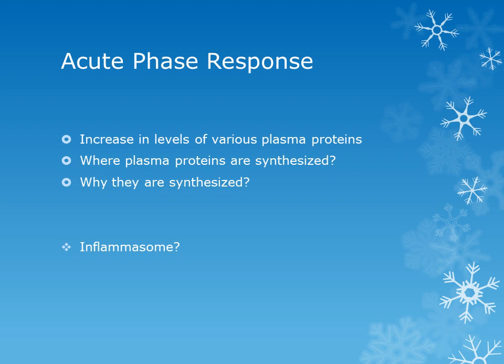So these are the important points about the acute phase response. Acute phase response is the increase in levels of various plasma proteins that can be detected in the blood. These plasma proteins are synthesized by the liver in response to various pro-inflammatory cytokines, which include interleukin-1, interleukin-6, and tumor necrosis factor.